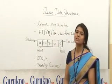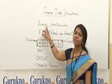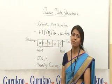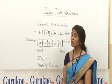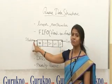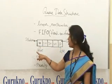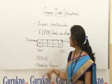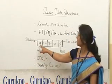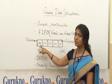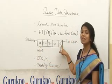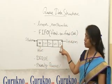Queue data structure is a non-primitive linear type of data structure in which insertion of an element takes place only on one end called the rear end, and deletion of an item takes place only on the front end. Here in this figure we can see that 10 is the item first inserted into the queue and 50 is the last item inserted into the queue.